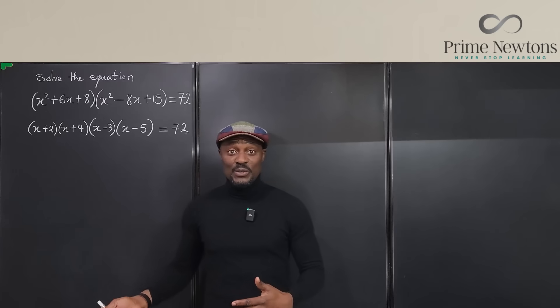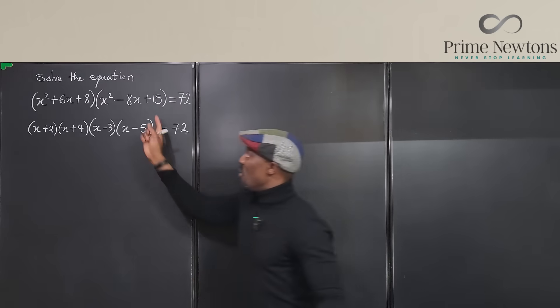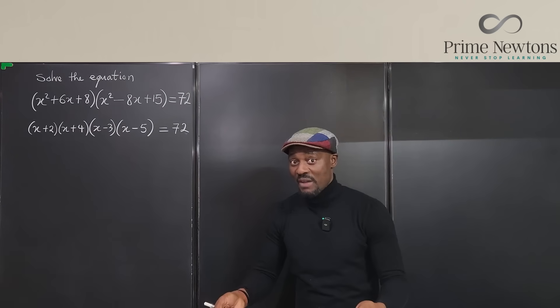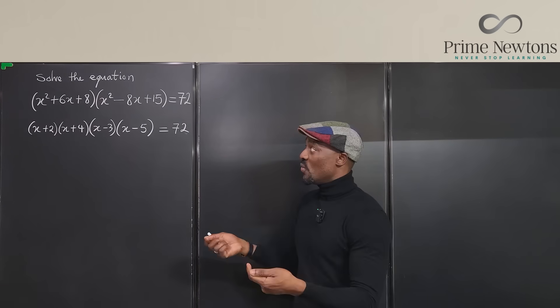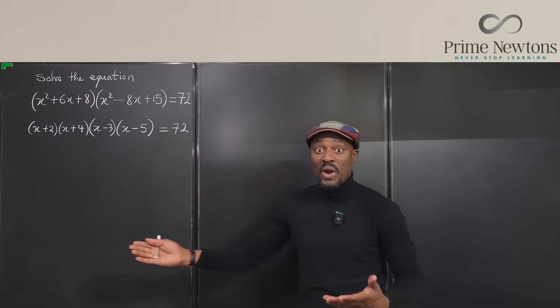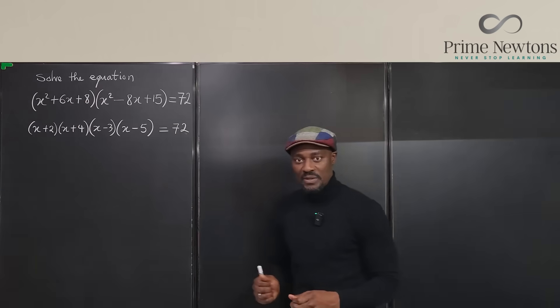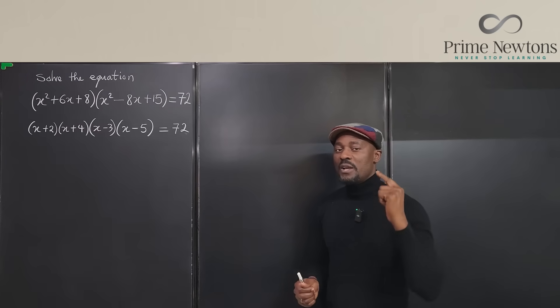Moving the 72 to the other side does not help. Multiplying this out is just going to make your work more complicated because unless you use a graphing calculator, you will not be able to pick out the four answers precisely. So what do you do with this? Now, this is where the trick begins to apply.